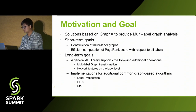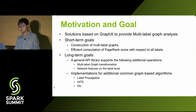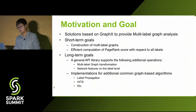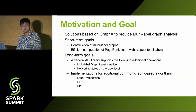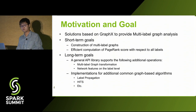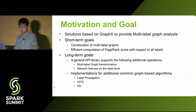What we did was find solutions based on GraphX to provide multi-label graph analysis. The short-term goals, which we have already achieved, are how to design multi-label graphs and how to construct one, and we also implemented efficient computation of PageRank scores with respect to all labels for every node. The long-term goals are to provide an API library allowing additional operations on the graph — for example, how to construct a new multi-label graph through transformation from an older graph, how to summarize different network features, and implementations for additional common graph-based algorithms like label propagation.